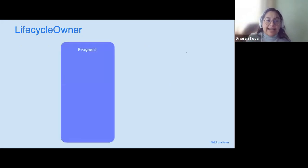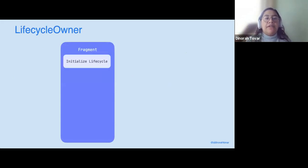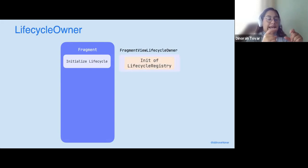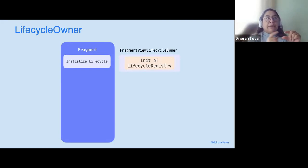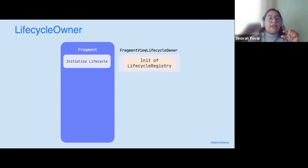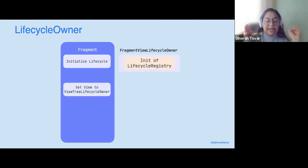What is going on exactly with LifecycleOwner? Let's deep dive on it. The fragment, at the end of the day, will be initialized and it will initialize a lifecycle variable. This will also initialize a lifecycle registry. It will give you the chance to have all the registers that are going to be added — all the observers. So you will be setting up a ViewTreeLifecycleOwner.